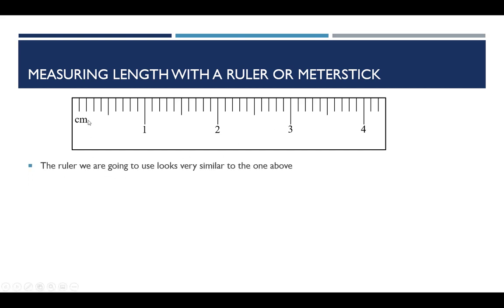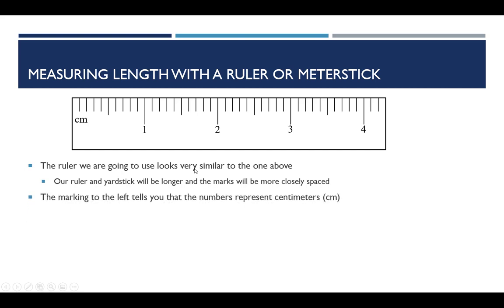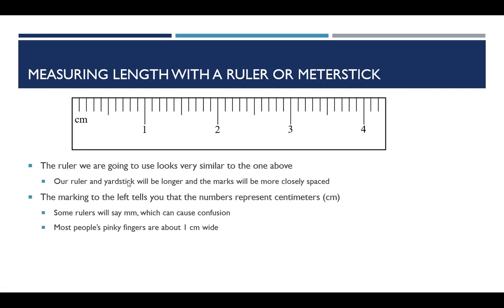Now, if we go ahead and look at this ruler, it's been blown up to make it easier to see, and it's looking very similar to the number line we saw on the previous slide. The ruler or yardstick would be longer and the marks would definitely be more closely spaced. The marking on the left side is telling us that this is going to be centimeters as the numbered mark — so 1, 2, 3, 4. Sometimes it will say mm, but remember: your pinky finger is about a centimeter wide for most people, and that should be your guideline. Your finger isn't going to be as thin as one of these markings, so if you always use that as a point of reference, you should do pretty well.